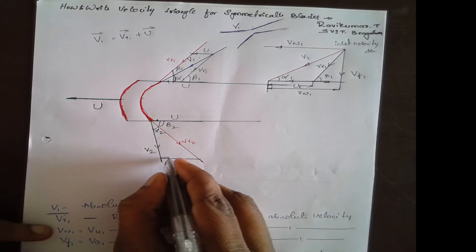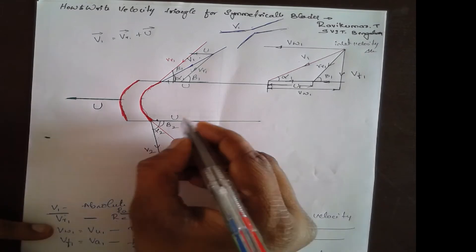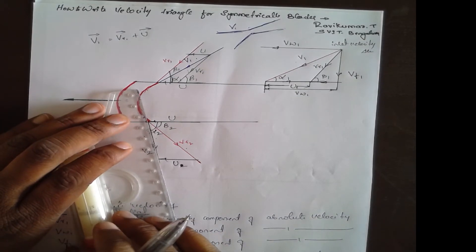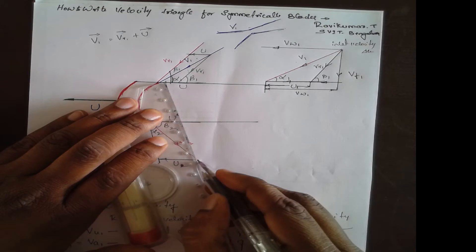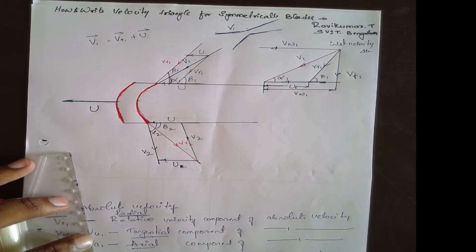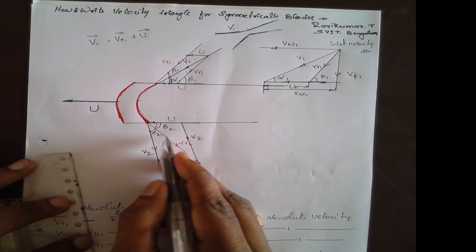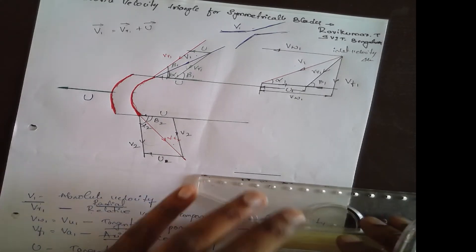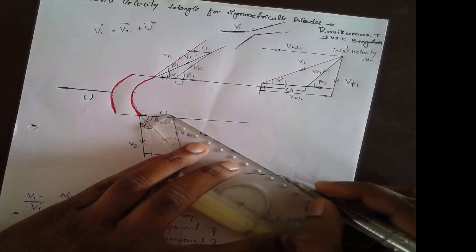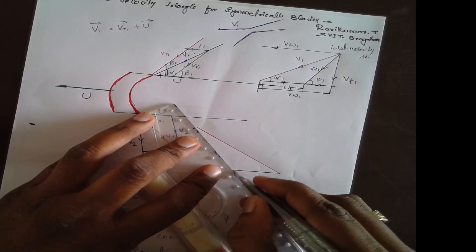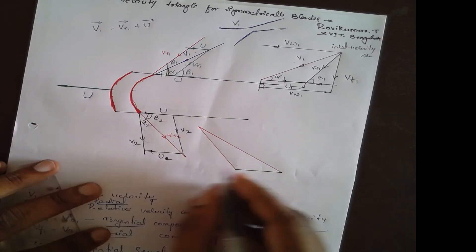Take u and draw a parallel line downward — this gives u2. Using the parallelogram on this side, you get v2. Considering the lower outlet velocity triangle, you get vr2 first, then v2.